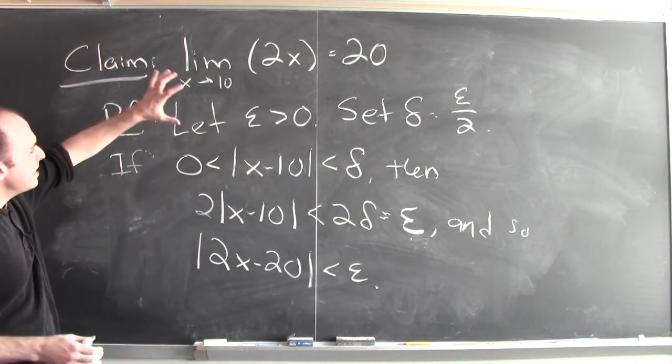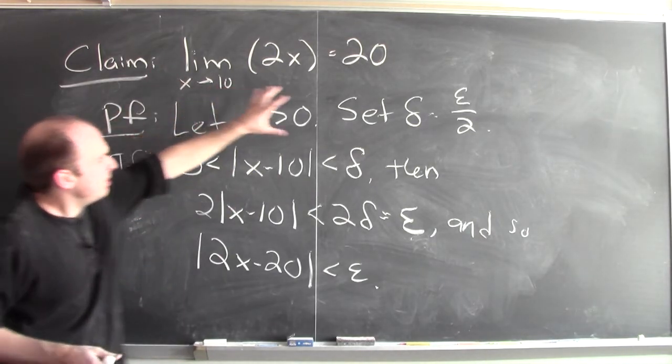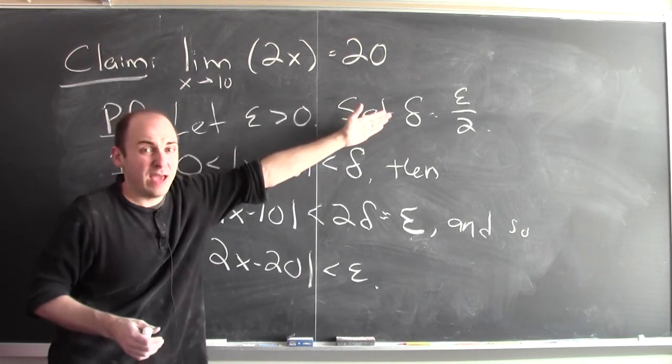So look at what we've shown, right? Some epsilon bigger than 0, a corresponding value of delta is going to be epsilon over 2.